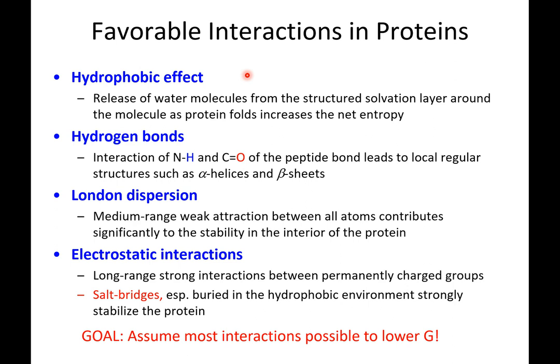The second important force driving proteins into a folded state is hydrogen bonds. Every amino acid has an amine group and a carboxylic acid group, and we can form hydrogen bonds between these two groups. That's going to be the really important driving force that allows our proteins to begin folding into the common secondary structures like an alpha helix or a beta sheet.